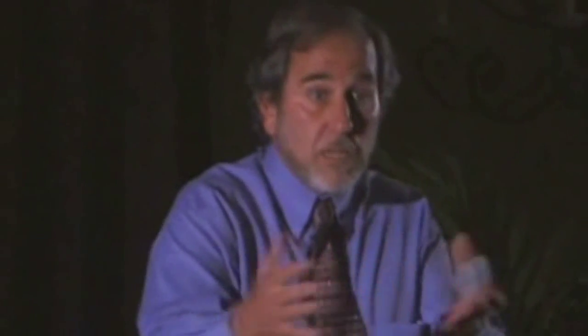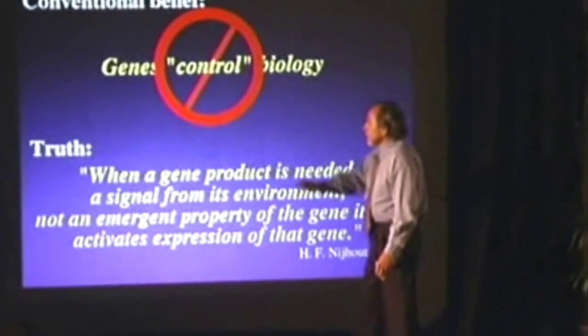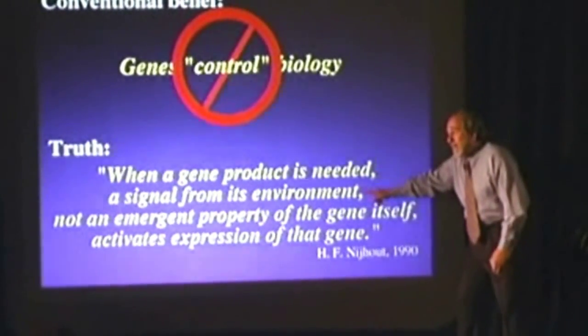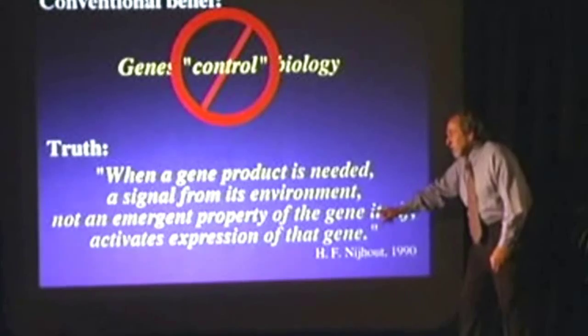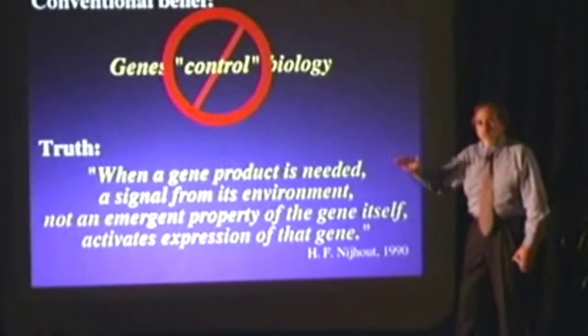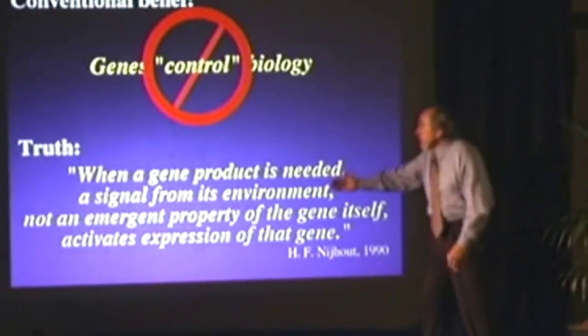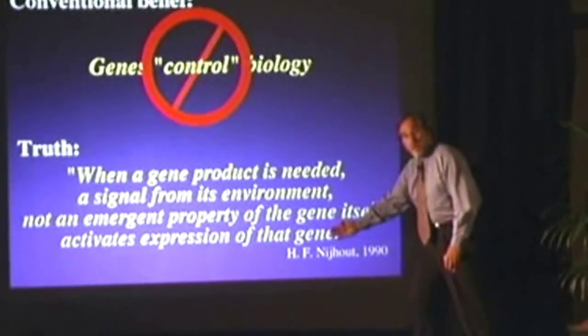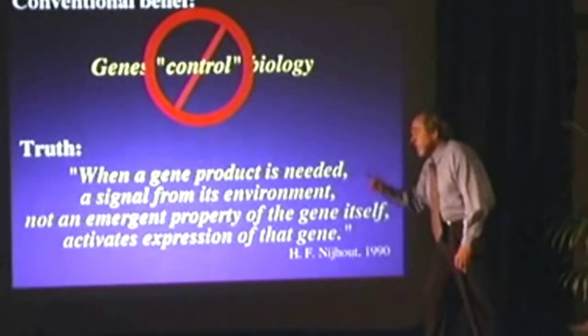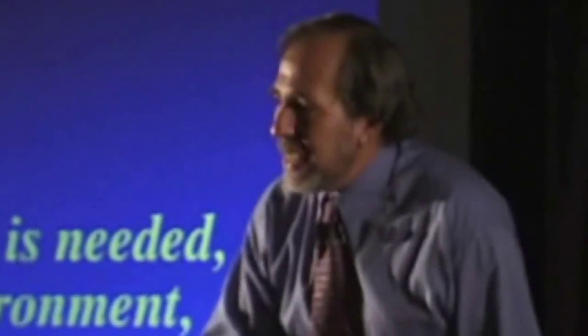So the question is, if I need a gene to be activated, why would a gene be activated? To make the proteins for the cell that needs to do the behavior. So the truth statement is this: when a gene product is needed, a signal from its environment, not an emergent property of the gene itself, activates expression of the gene. Well, that's somewhat of a complicated sentence, so let's simplify it. Just read line two and line four. And if we read that, it says: a signal from its environment activates expression of the gene.